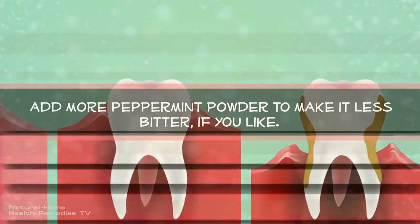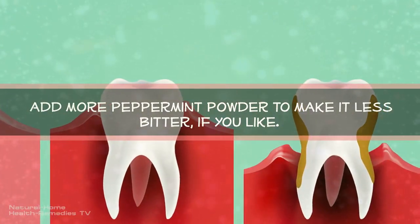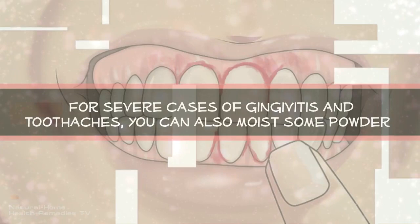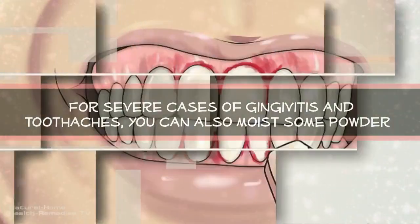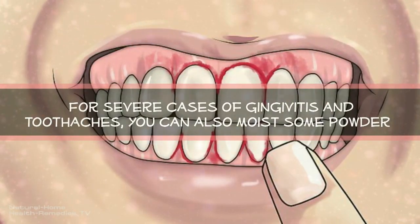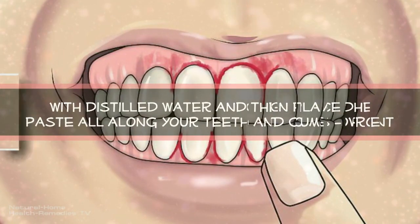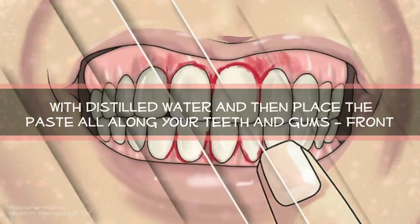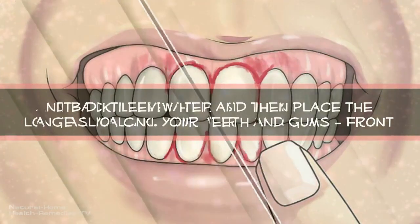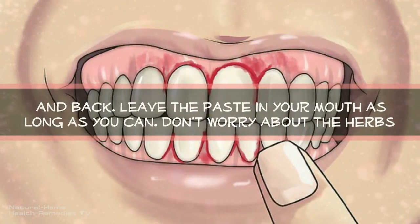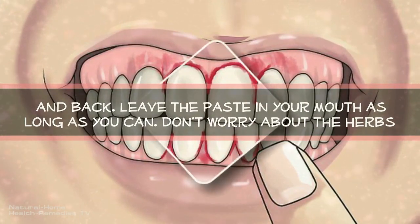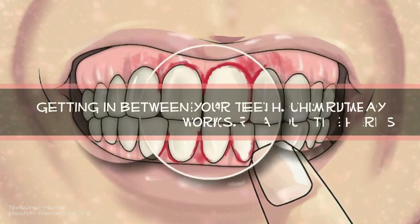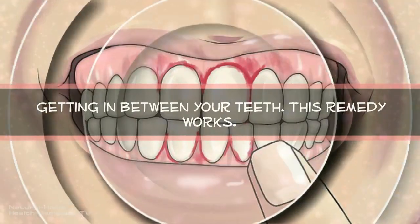You can add more peppermint powder to make it less bitter if you like. For severe cases of gingivitis and toothaches, you can also moisten some powder with distilled water and then place the paste all along your teeth and gums, front and back. Leave the paste in your mouth as long as you can. Don't worry about the herbs getting in between your teeth.